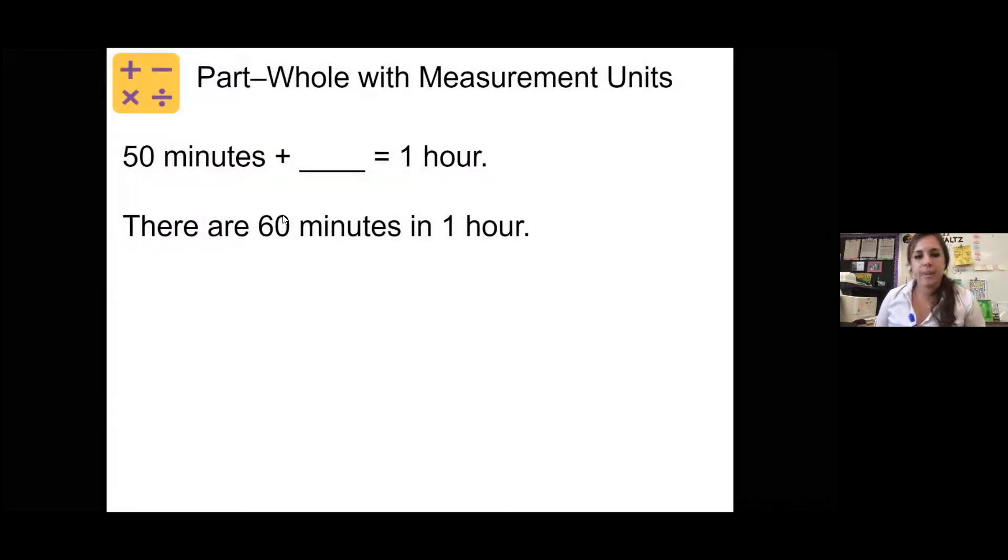All right, what would go in that blank? Remember 60 minutes in an hour. So 50 minutes plus how many minutes would equal one hour. So another way you could have written this was 50 minutes plus blank equals 60 minutes. Because one hour and 60 minutes are the same. And we know 50 plus 10 minutes would get you to 60 minutes.